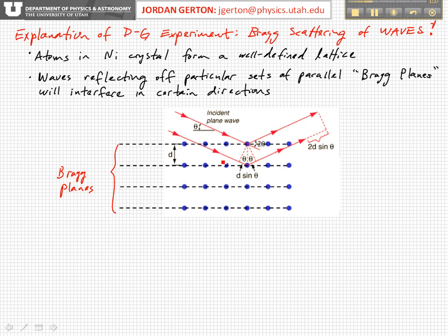I'm drawing the peaks and troughs of the incoming wave. We can get scattering — basically specular reflection — off planes which correspond to different layers in the crystal. We call these Bragg planes.